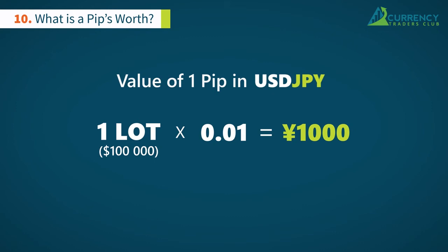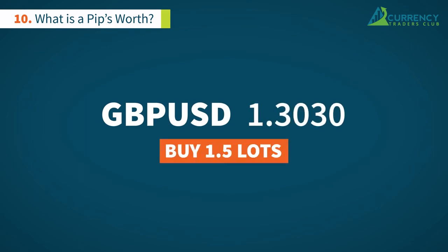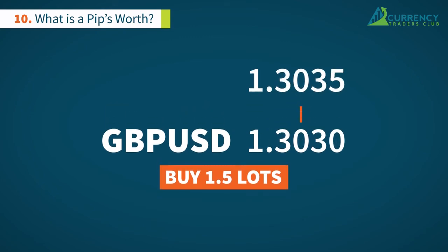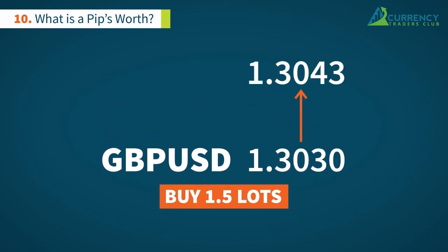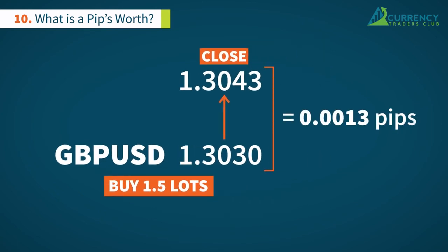Let's take a look at a practical example using a trade. A trader buys 1.5 lots of GBPUSD at 1.3030. Once the price rises, for example to 1.3043, he decides to close his position. He's made a profit of 13 pips.